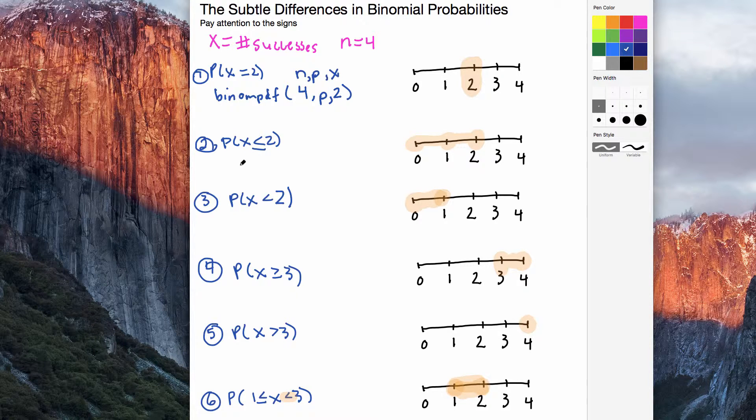With the x less than or equal to 2, this is a slightly different binomial calculation. On a TI calculator, you'd say binomial CDF. Notice the C there? That means cumulative. So when I put in 4, p, 2, it's going to count all the probabilities starting at 2, going down.